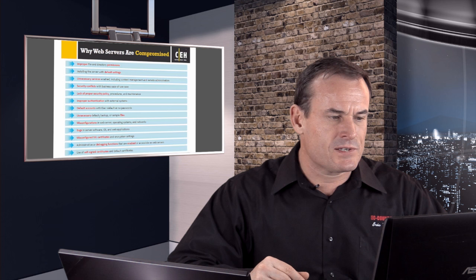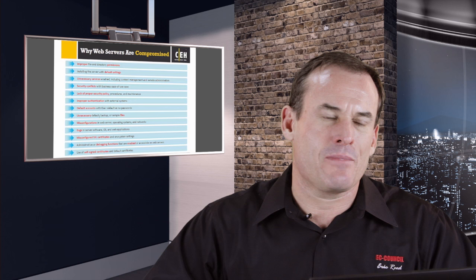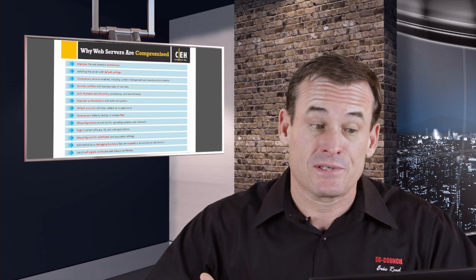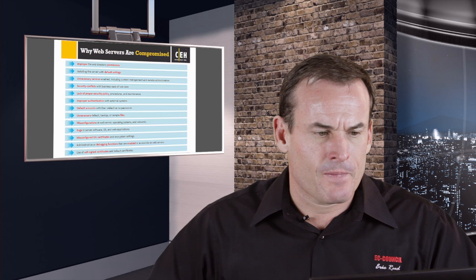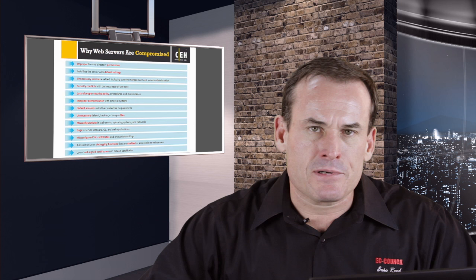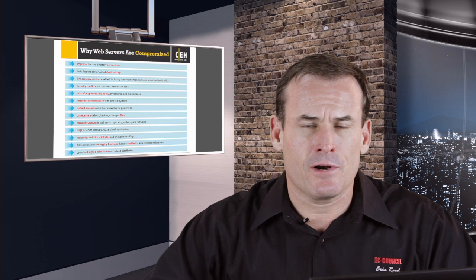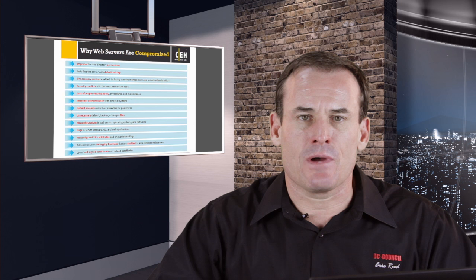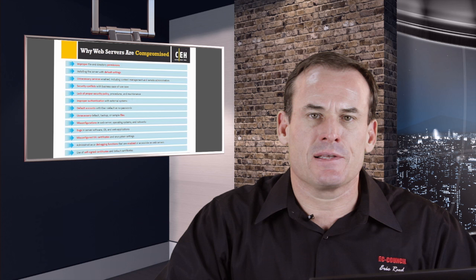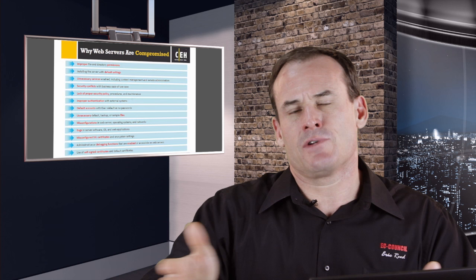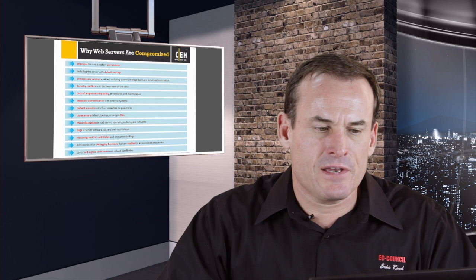Security conflicts with business ease of use: we need to make something work, and in order to do that, maybe we have to relax permissions or enable functionalities that may be insecure, but it's all for the purpose of getting the business function done. Lack of proper policy procedures and maintenance is also a key issue. Policy is the underlying foundation of everything we do security-wise. Without a proper policy, we lack the determination of what we need to do to harden the server, and we get chaotic security configuration.